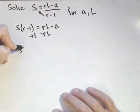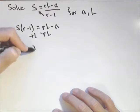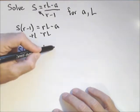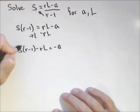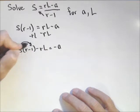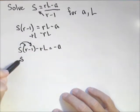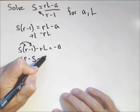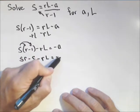And we get S times r minus one minus r L equals negative A. So I'm gonna distribute this S here, and I get SR minus S minus r L equals negative A.